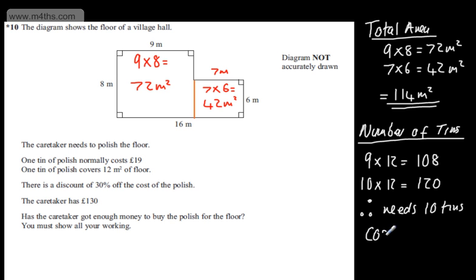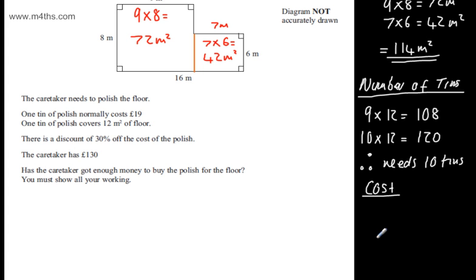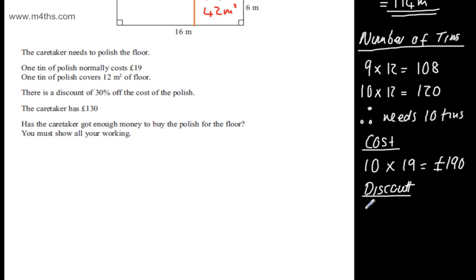So let's now look at the cost. If we think about the cost now, we've got 10 tins at 19 pounds. So 10 times by 19 is going to give me 190 pounds. Let's now look at the discount. We have a 30% discount. So we can say 10% of 190 is going to be equal to 19 pounds. So if we multiply this by 3, 30% of 190 is going to be equal to 57 pounds.